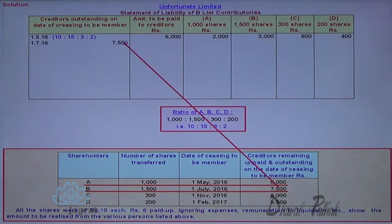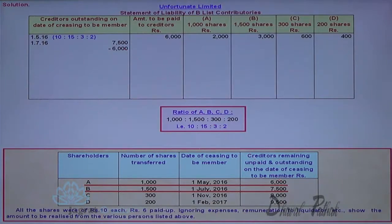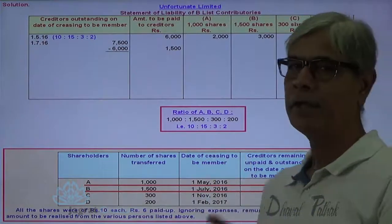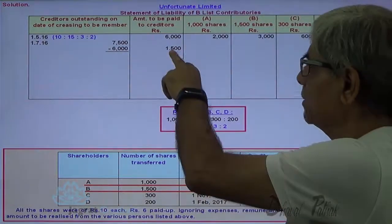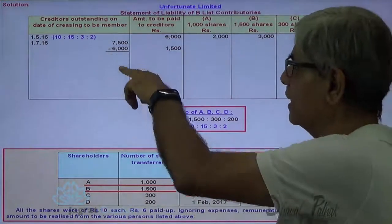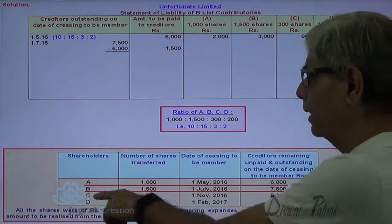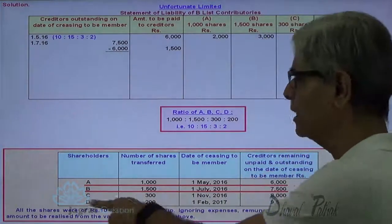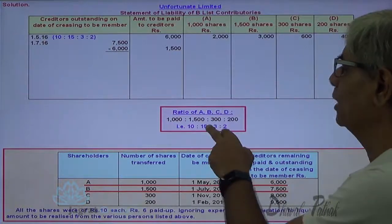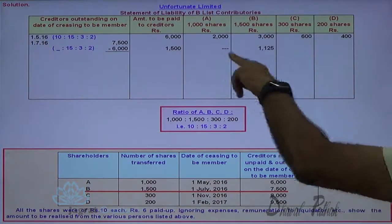Subsequent liability as on 1st July 2016 was 7,500, which includes this 6,000. So 6,000 is already distributed. Deducting 6,000, the remaining 1,500 is the increase in liability for which A will not contribute, because on 1st of July 2016 A is no longer a member. So this increase of 1,500 has to be distributed between B, C, and D — because on 1st of July, B is a member, C is a member, and D is a member. So 1,500 will be distributed in the ratio of 15 : 3 : 2. A has nothing to contribute for this 1,500 liability.